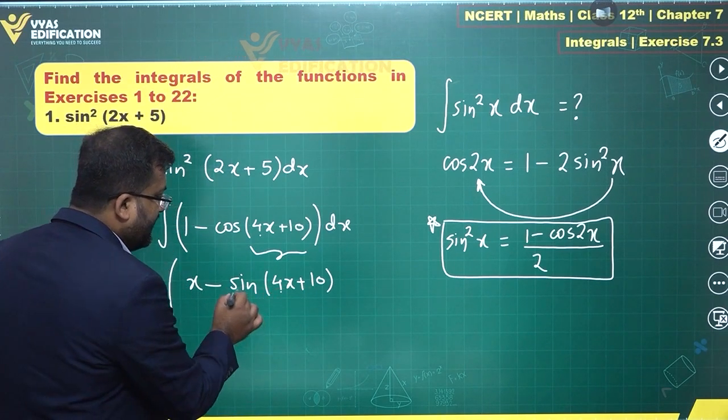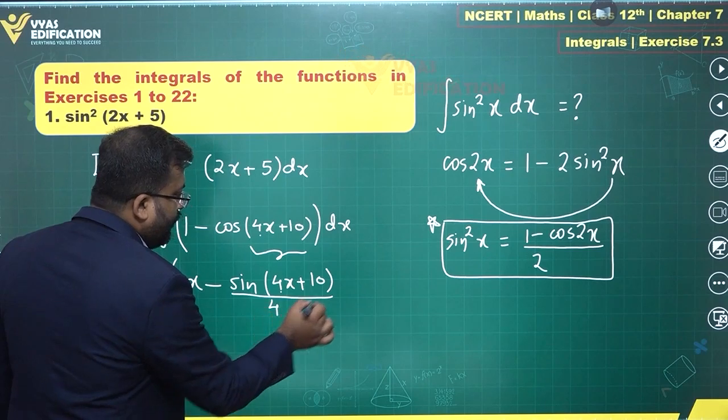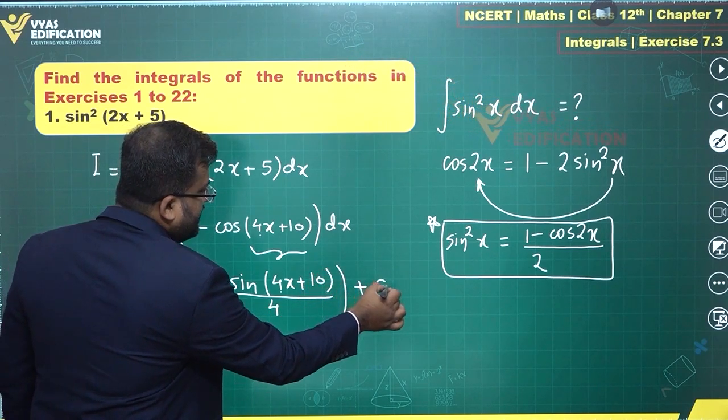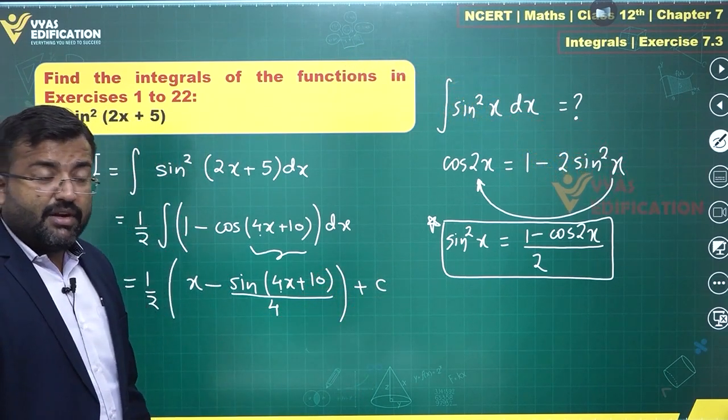So you get minus of sin(4x + 10) and this sin(4x + 10), there is a coefficient of x which is there. You have to divide with that 4. A constant term will be added. That's a complete integral.